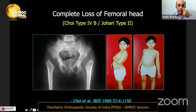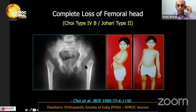This is the Johri Type 2, corresponding to Choice Type 4b, and it can be quite disabling to the child. What is visible here is not the femoral head but actually the trochanteric apophysis — the femoral head is completely missing from its place in the acetabulum.